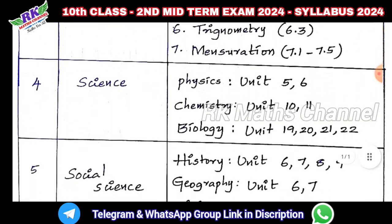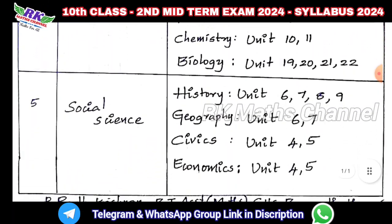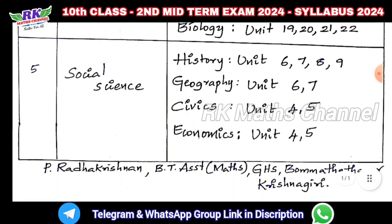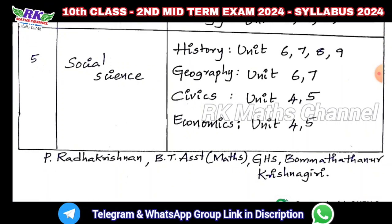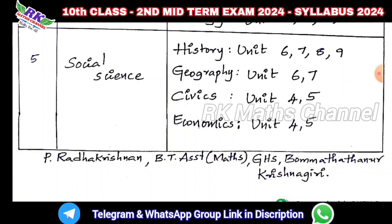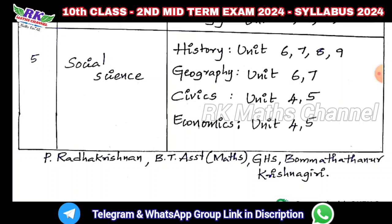Social Studies syllabus: History — units 6, 7, 8, and 9. Geography — units 6 and 7. Civics — units 4 and 5. Economics — units 4 and 5.